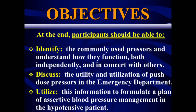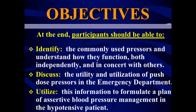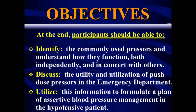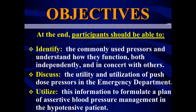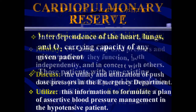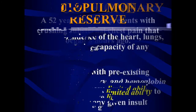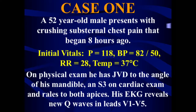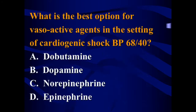The second agent to avoid is epinephrine. A number of studies, including one published this year, link epinephrine with poor outcomes and raised mortality in the setting of acute MI. The first agent we're going to reach for in cardiogenic shock is dobutamine.